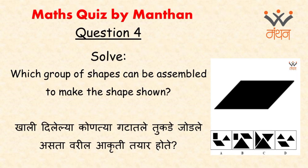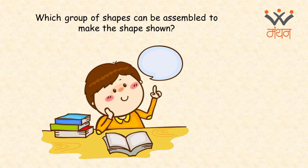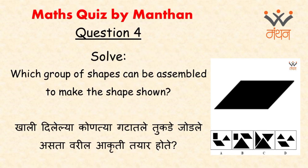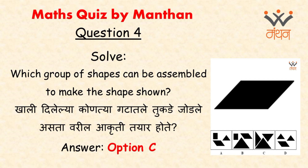Question number 4 is something which must have forced you to imagine something in your mind. Which group of shapes can be assembled to make the shape shown? The answer is C. If you had to make the pieces physically, I really appreciate your effort, but this kind of imagination in the mind is a must in mathematics, especially in geometry.